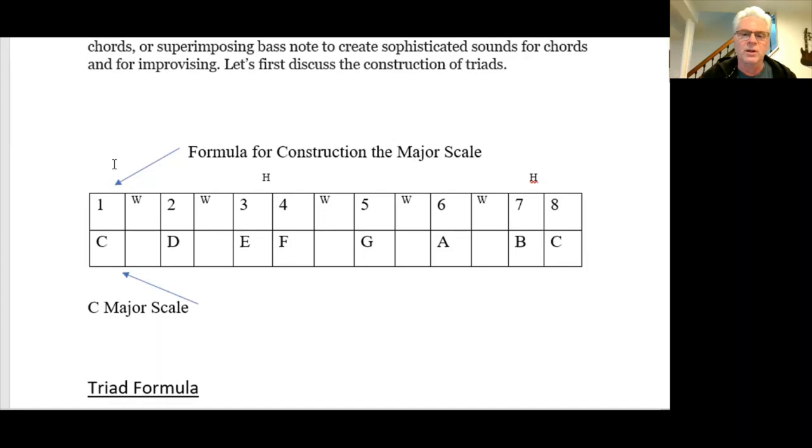Remember, the major scale, the formula for building the major scale is whole, whole, half, whole, whole, whole, half. So if we want to build the C major scale, the first note is C, we go a whole step to D, another whole step to E, a half step to F, a whole step to G, another whole step to A, a whole step to B, and there's our half step between B and C.